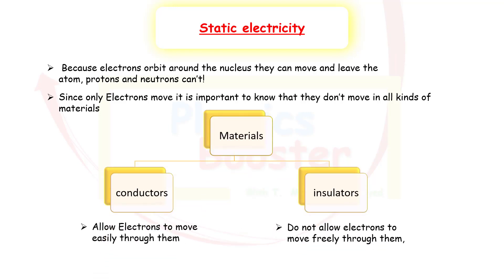Not all materials allow electrons to move through them, so we can divide materials into two types. Conductors allow electrons to move easily through them. Insulators, on the other hand, do not allow electrons to move freely through them. There's also something called semiconductors — not our topic today, but they allow electrons to move, just not as easily.